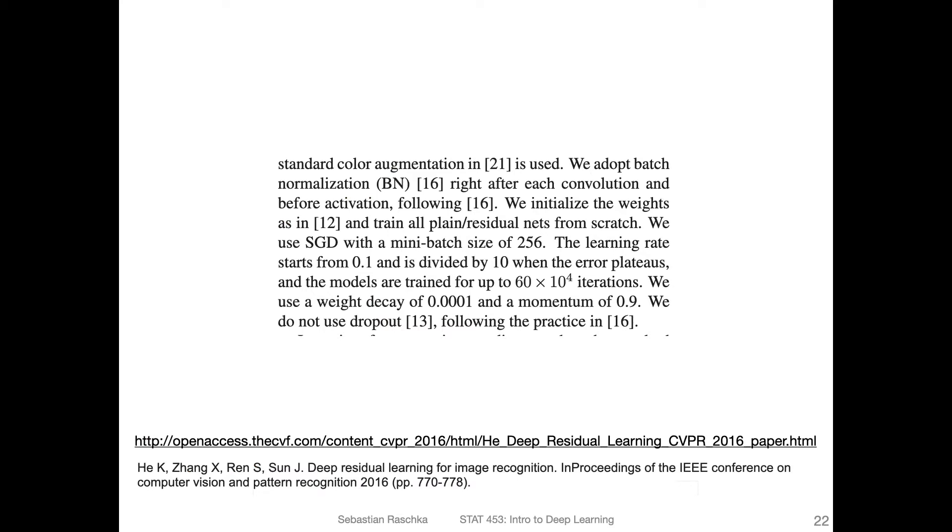All right, let's now talk about my favorite way of learning rate decay. So I'm not using learning rate decay that often, because I usually find that Adam, an optimizer that we will be discussing later, works pretty well out of the box. But sometimes I compare it to SGD and learning rate decay. And I find this method works actually best compared to other methods I've tried. I got this from a paper in 2016 on deep residual learning, which is the paper that originally proposed the ResNet, which we will be talking about also next week. That's at least where I got the inspiration for that.